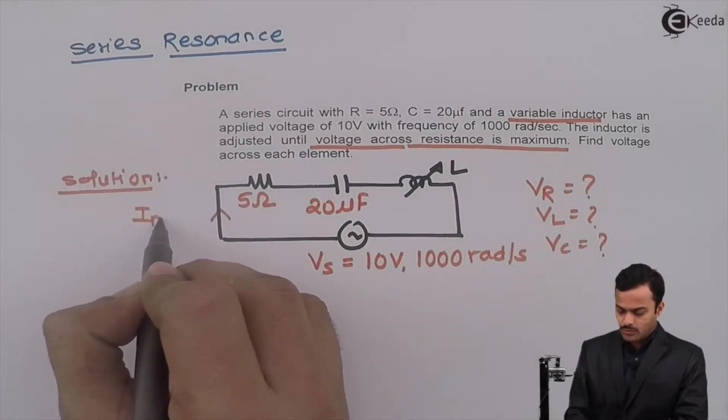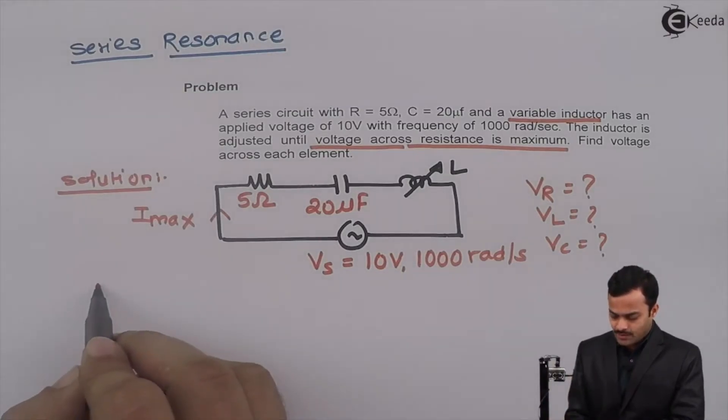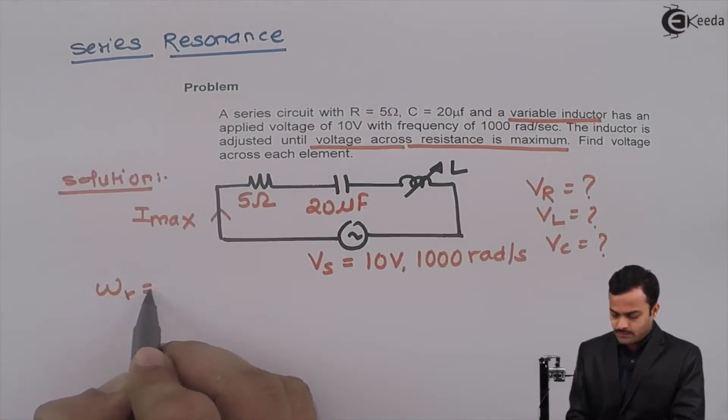The current will be maximum only at series resonance. These are the things which will indicate this is a problem of series resonance. Once you understood this is a series resonance, quickly I can say resonating frequency will be 1000 radian per second.